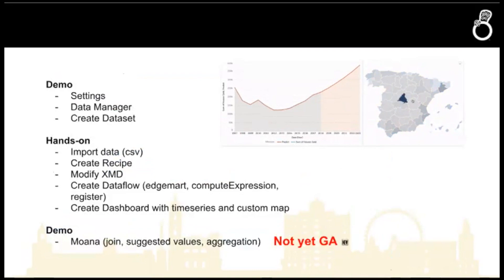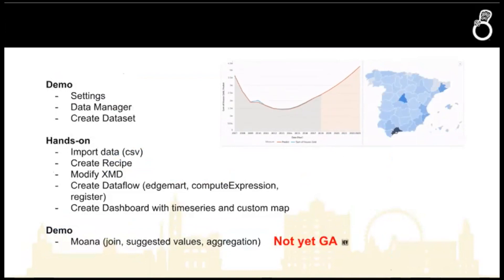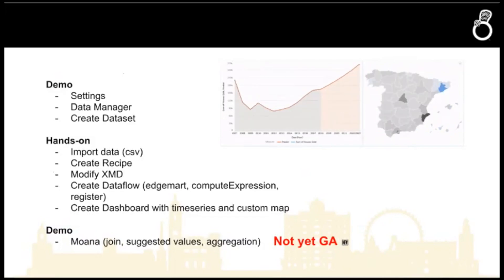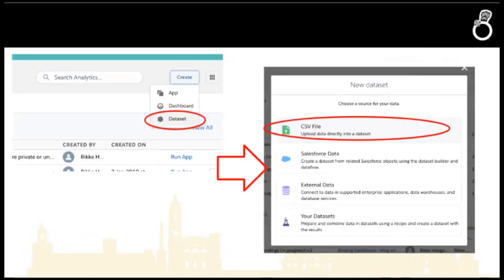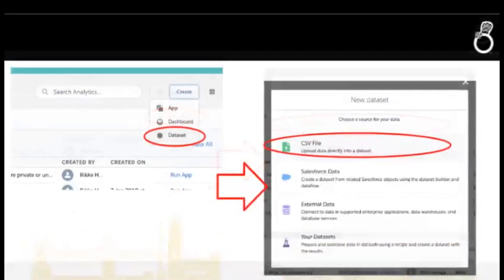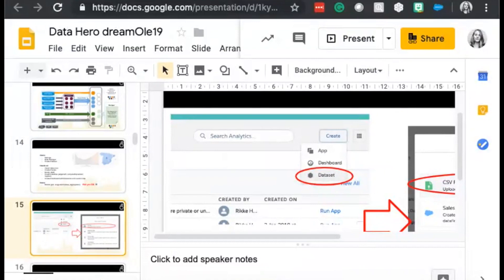So I want to do a few things together with you. First I want to show a quick demo of a few things and then we're going to get hands-on. The files and the developer org are coming in handy here. What we're ultimately going to do is build something with a Spain map — some data about houses sold — and we're going to do a time series and a Spain map as well. All the slides are available so you can look back at the details afterwards.